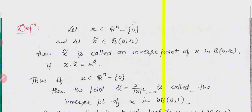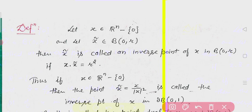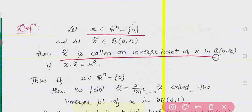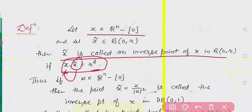Consider the ball having center 0 and radius r. Let x belong to ℝⁿ minus {0}, that means x is a non-zero point in ℝⁿ, and x̃ in B(0,r). Then x̃ is called an inverse point of x in B(0,r) if x · x̃ is equal to r² (radius squared). If x · x̃ equals r², then x̃ is called the inverse point of x.